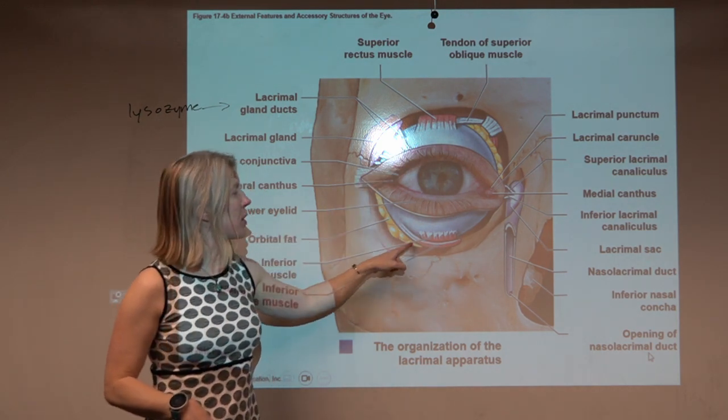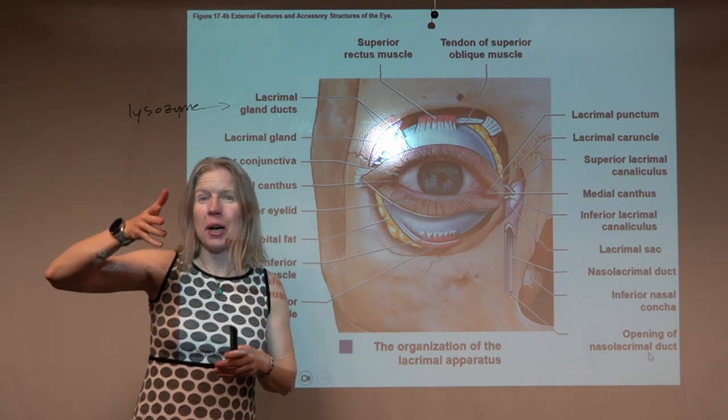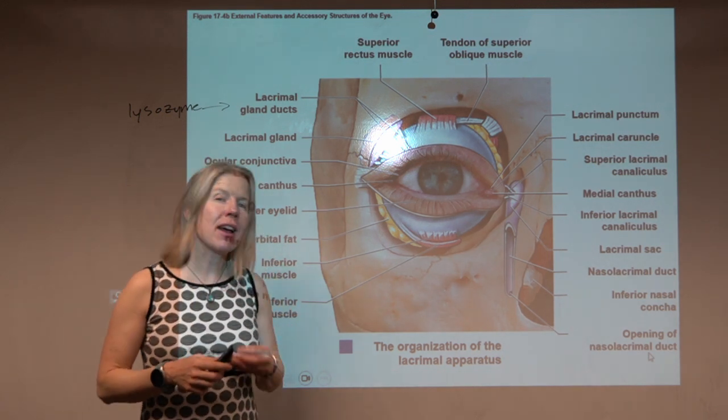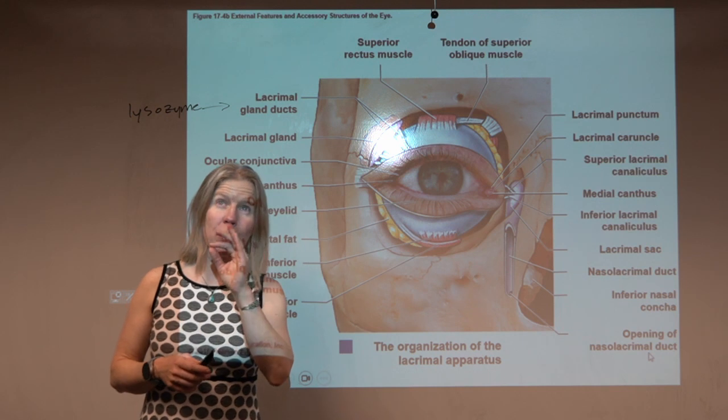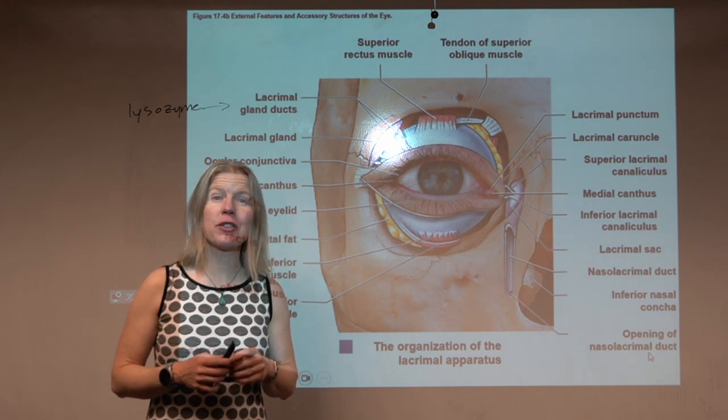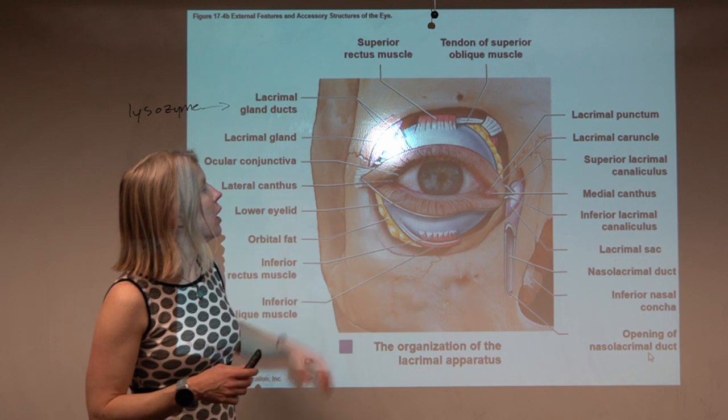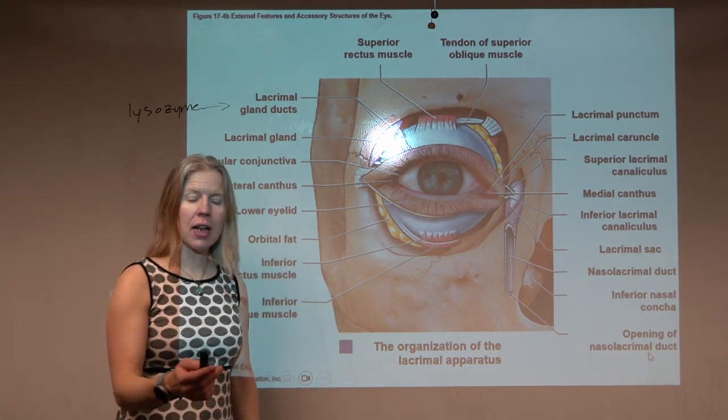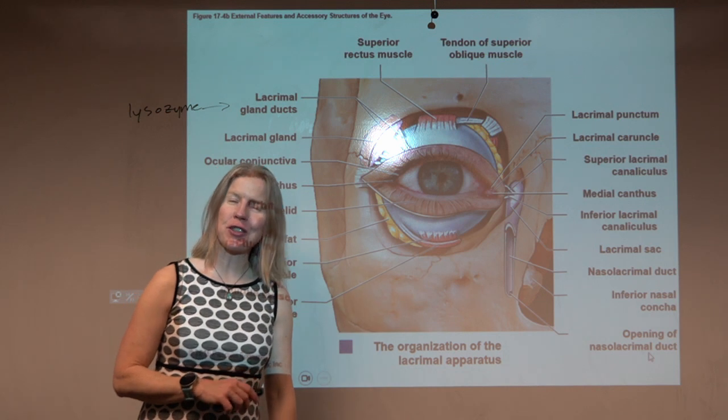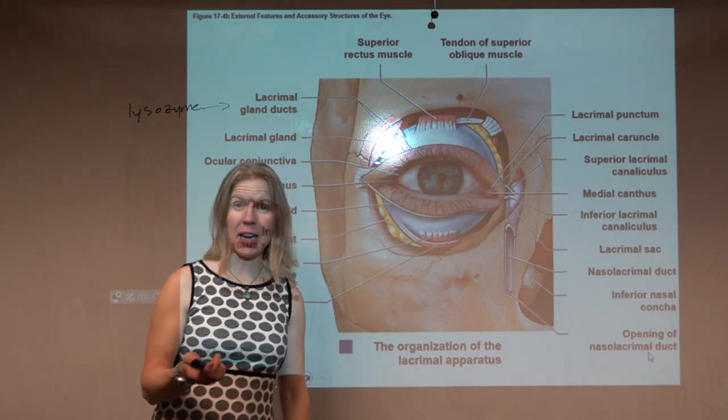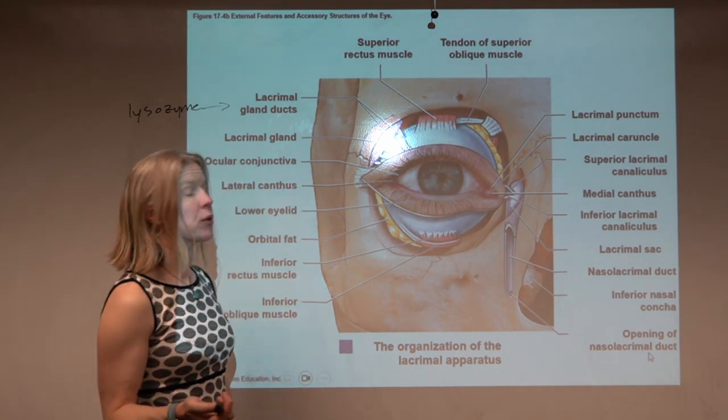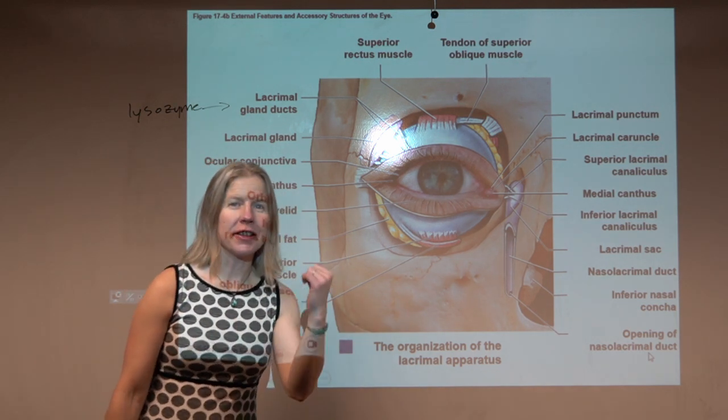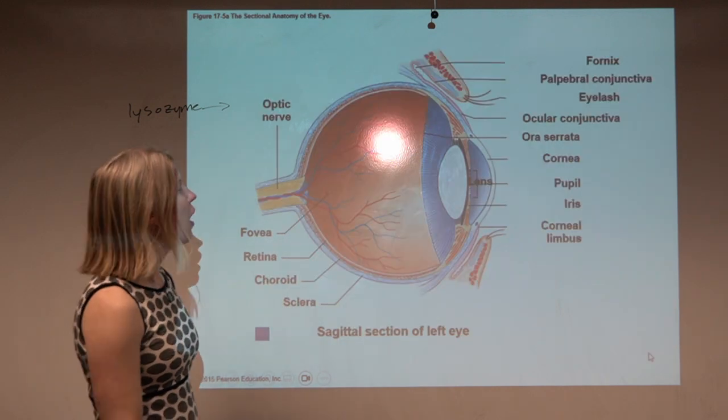But then you also have these oblique muscles that can help pull your eye on an angle. You may never have paid attention to it before, how precisely your eye can move in all directions, but it's thanks to a multitude of extrinsic eye muscles. And if you recall your cranial nerves, there are quite a few different cranial nerves that actually innervate those eye muscles, so we have a lot of control over that movement.